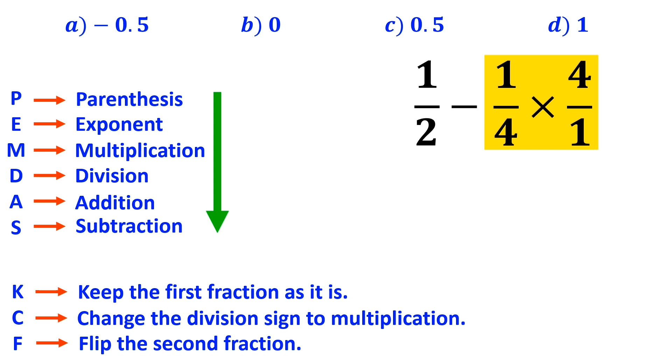In the next step, the two fours cancel each other out, and the entire expression simplifies to one-half minus one, which finally gives us a value of negative 0.5.